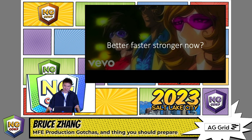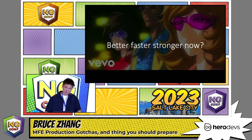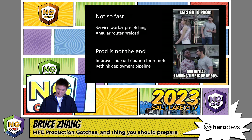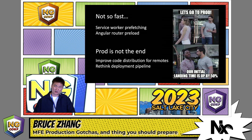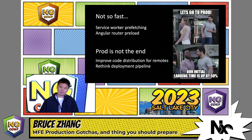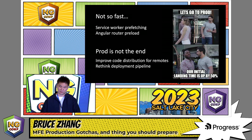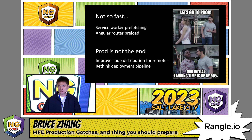So you've fixed all the issues mentioned, along with many other weird ones that will happen to you, and your app is running just fine. Is your newly structured MFE application now better, fast, and stronger? Well, the answer is: not yet. There are still important performance tools that don't work out of the box with MFE, such as service worker prefetching and Angular router preload. We kept our Angular router preload by fixing the race condition, because we want to preload some heavy remotes. But we got rid of service worker prefetch, because it was causing more issues than it solved.